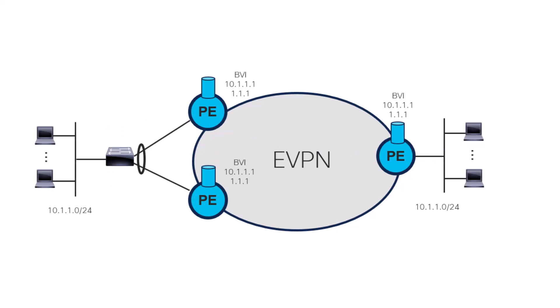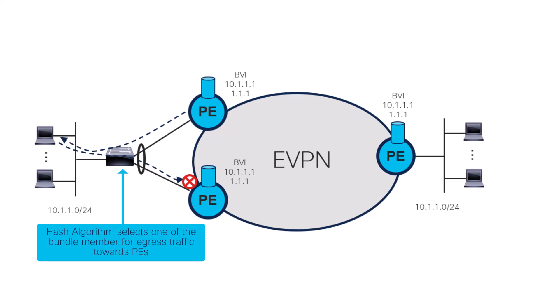Another similar pitfall to avoid is when checking connectivity to a host connected to a dual home site that uses all-active load balancing, as we see here on the left-hand side. In such a scenario, even if we follow our first golden rule and ping from the local PE, the ping might still fail. Why? Because there is a 50% chance the echo reply comes back to the second PE, where it is consumed because it also owns the BVI Anycast address. So whether or not the ping is successful all depends on the load balancing hash algorithm of the switch.